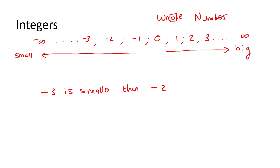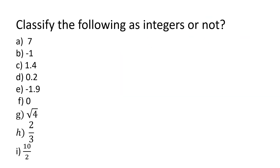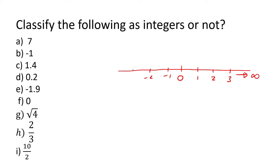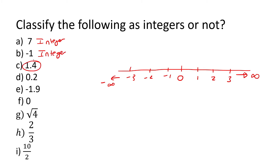So what we're going to do now is I want you to just tell me whether these are integers or not. Remember what we've said — on the number line, we have zero, and then we've got numbers like one, two, three, and then it goes all the way to infinity, and then minus one, minus two, minus three, and then that goes all the way to negative infinity. So is the number seven going to be on here? Definitely — that's an integer. What about the number minus one? There it is, so that is definitely an integer. What about 1.4? Well, that's not an integer, because the integers are 0, 1, 2, 3 — it's not the decimals in between. So this will say no, it's not an integer.